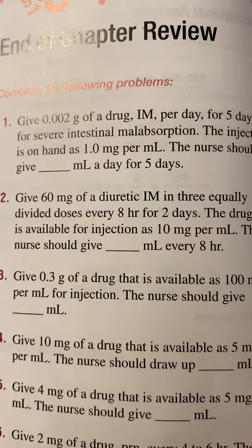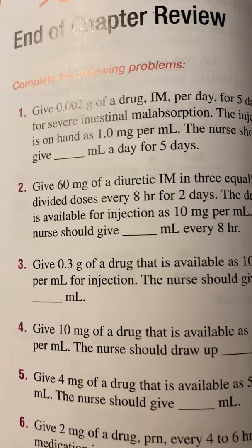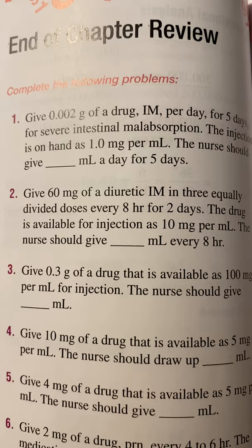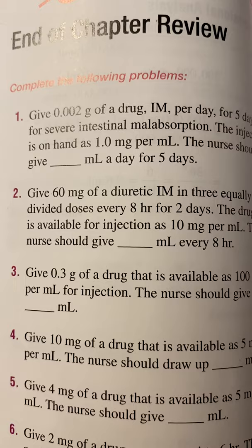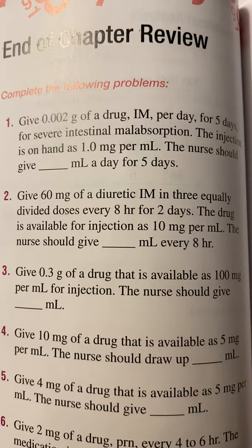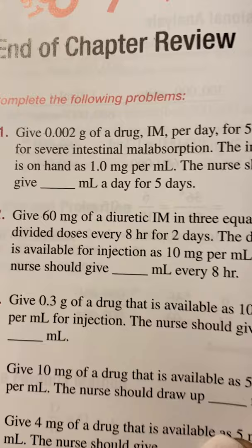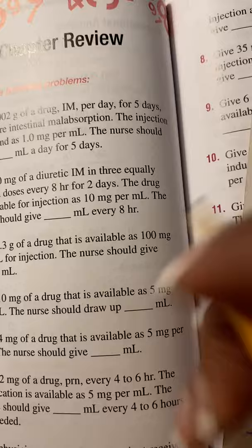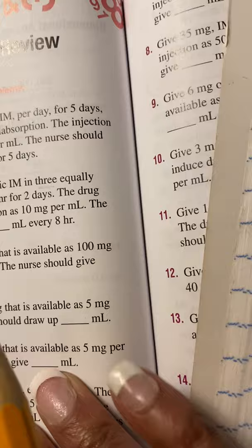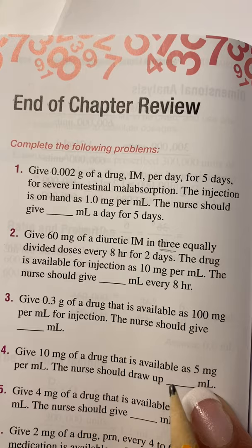All right, let's try number 2. I don't want to do all of your homework problems for you, but I did want to do at least one or two. For number 2, it says give 60 milligrams of a diuretic intramuscularly, in 3 equal divided doses every 8 hours for 2 days. That '3 equally divided doses' is going to come in handy. The drug is available for injection as 10 milligrams per 1 milliliter. The nurse should give how many milliliters every 8 hours?